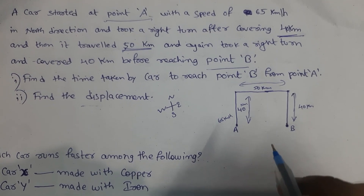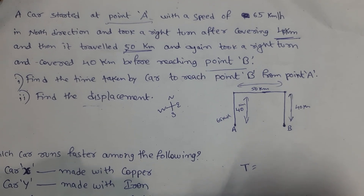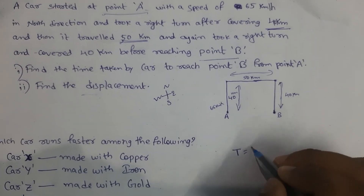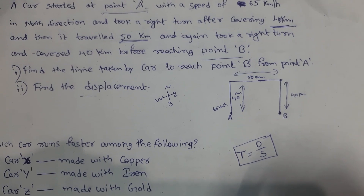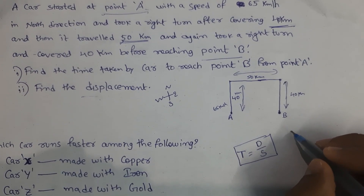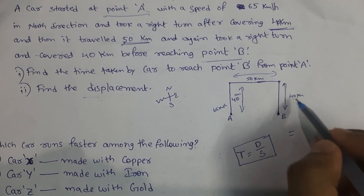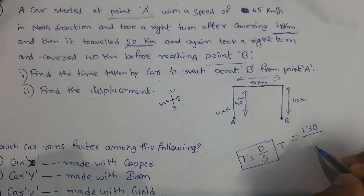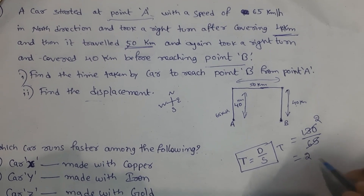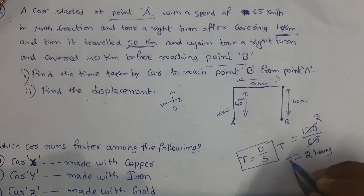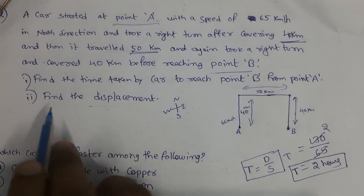To find the time taken by the car to reach point B, time is equal to distance divided by speed. We calculate the total distance: 40 plus 50 plus 40 equals 130 kilometers. Divided by speed 65 kilometers per hour, that means 2 hours. This is the time.